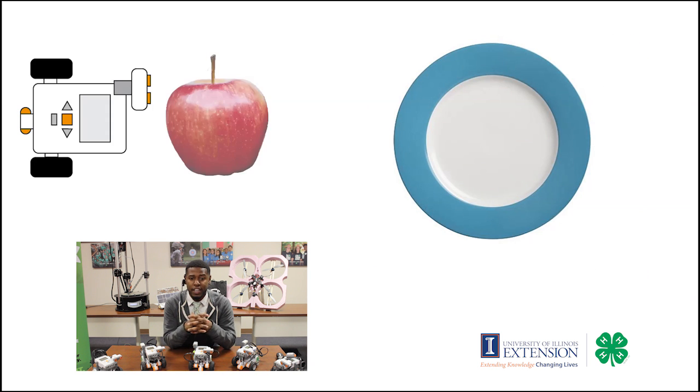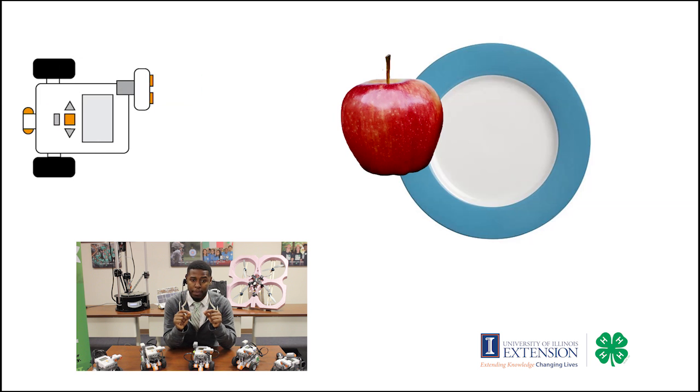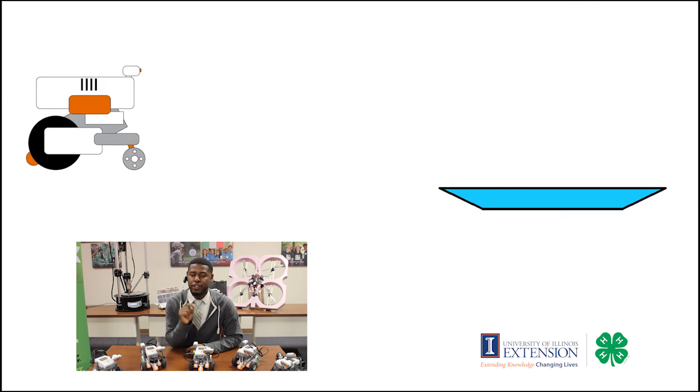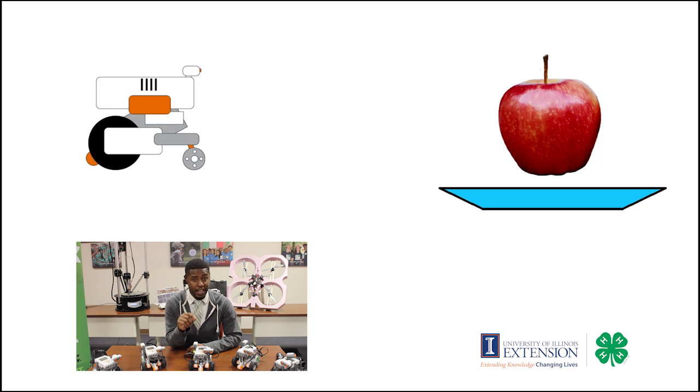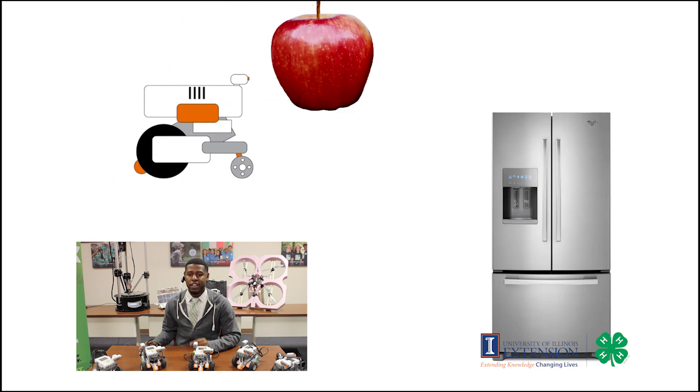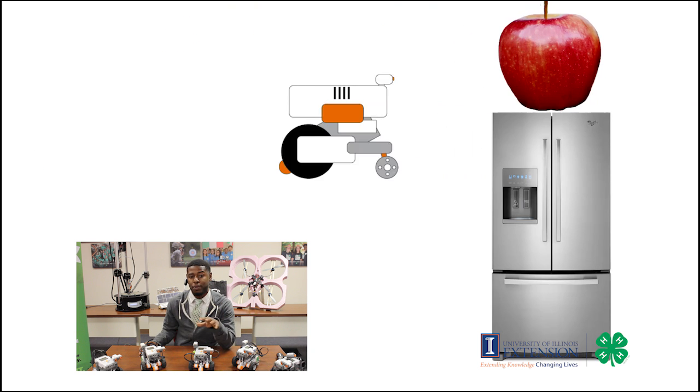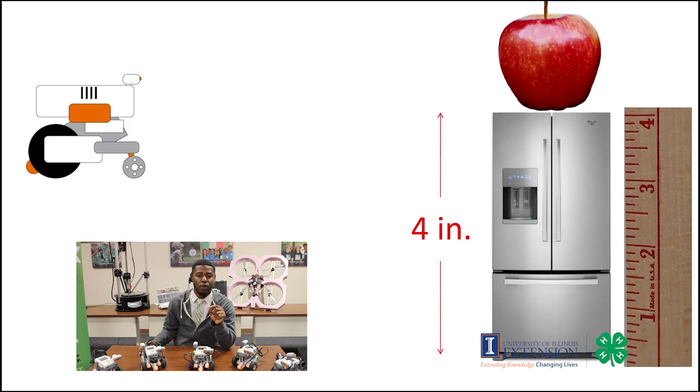To be successfully delivered, any part of the food item must be within the designated region of the plate. Points will be awarded for each food item successfully delivered if the food and plate are on the robot table. More points will be awarded for each food item successfully delivered if the food and plate are on the table in a refrigerator or any type of pantry that is at least four inches above the robot table surface.